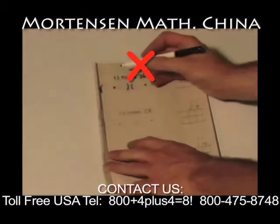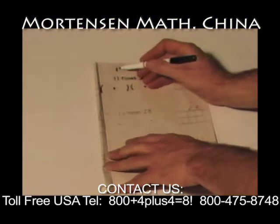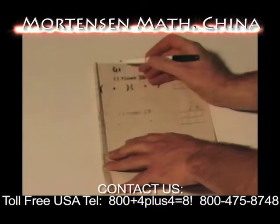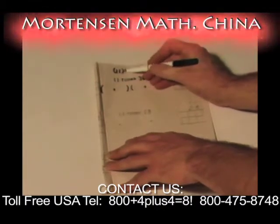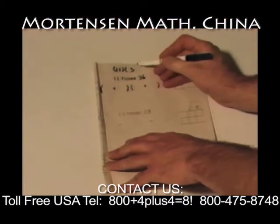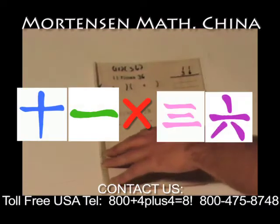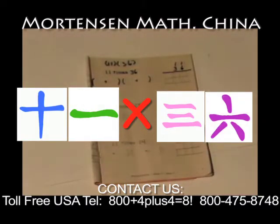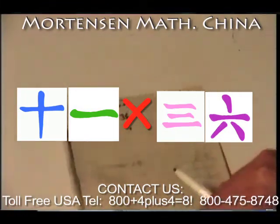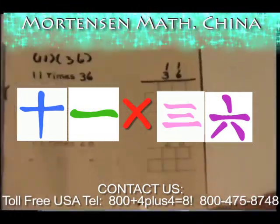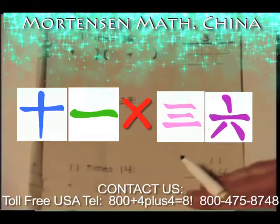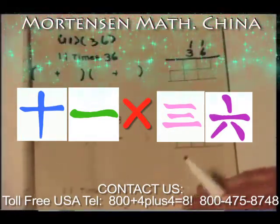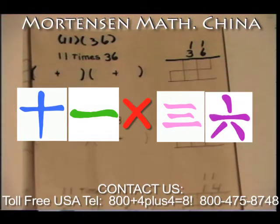The first thing we will do is write our problem as factors, short end, eleven over thirty-six. Up. Let's look at that. Eleven over thirty-six up.